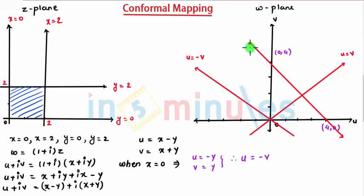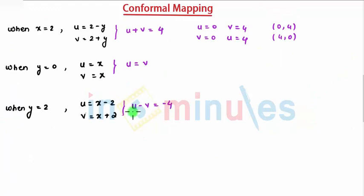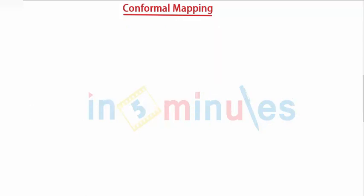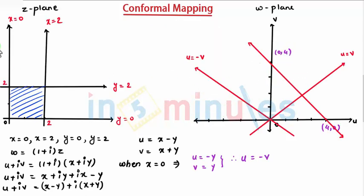The next equation is u minus v equal to 4. Same calculation: when u equals 0, v equals minus 4, and when v equals 0, u equals minus 4. I got two points: 0 comma minus 4 and minus 4 comma 0. I can make these points and join them with a line.